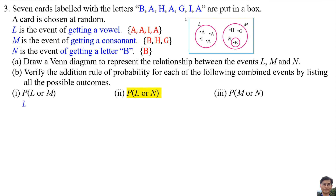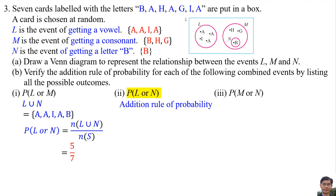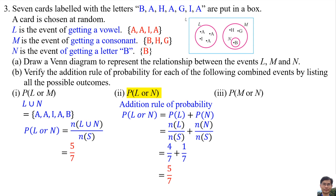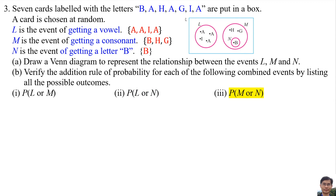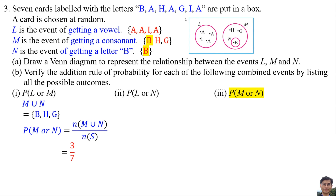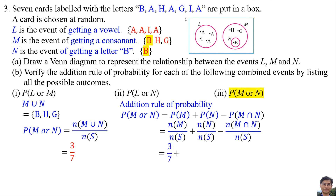The probability of L or N: L ∪ N has elements {A, A, I, A, B}, so P(L or N) = 5/7. Using the addition rule, the probability is also 5/7, so the addition rule is verified. For the probability of M or N: The common element for M and N is {B}. M ∪ N has elements {B, H, G}, so P(M or N) = 3/7. Using the addition rule, the probability is also 3/7, so the addition rule of probability is verified.